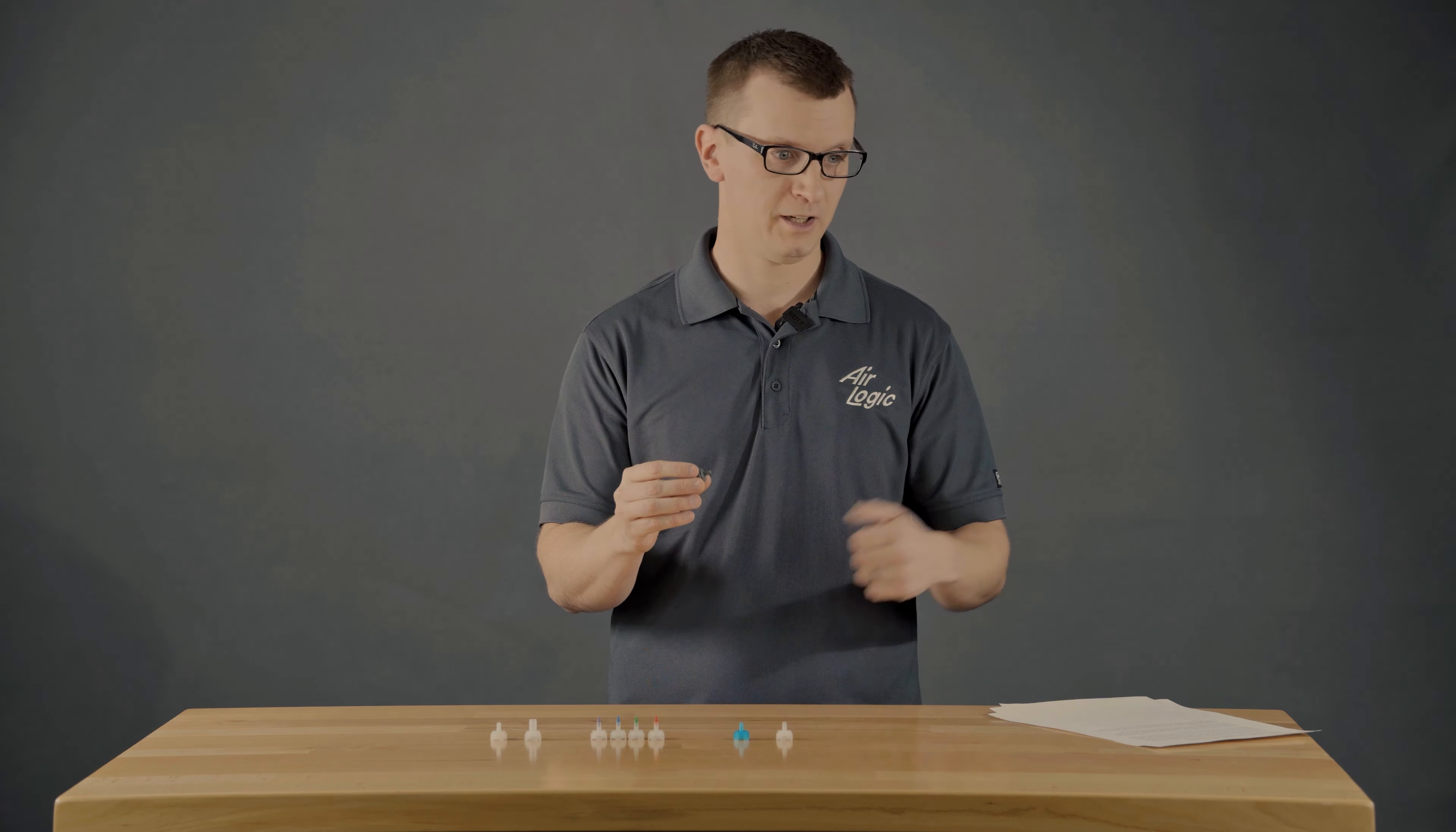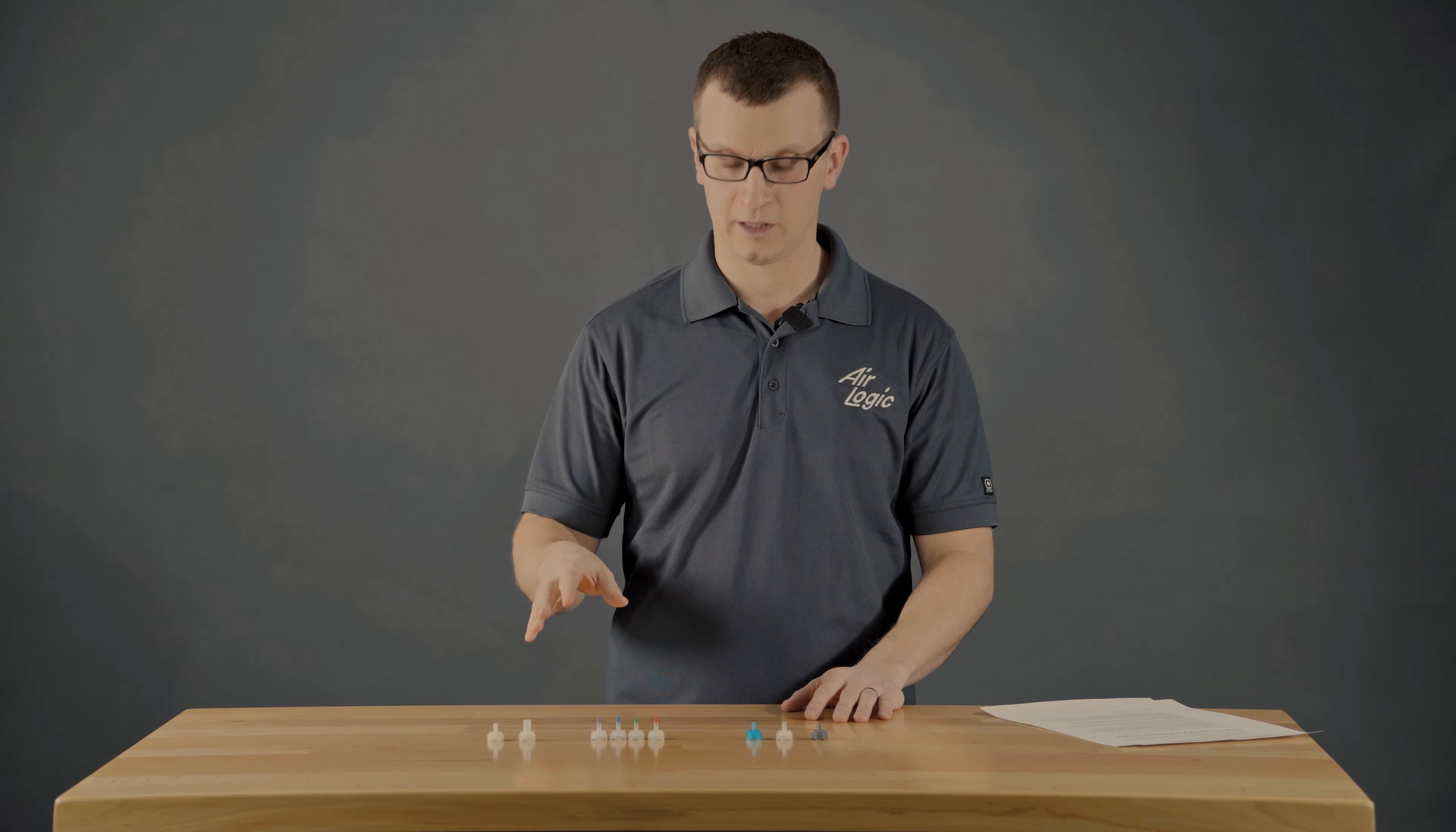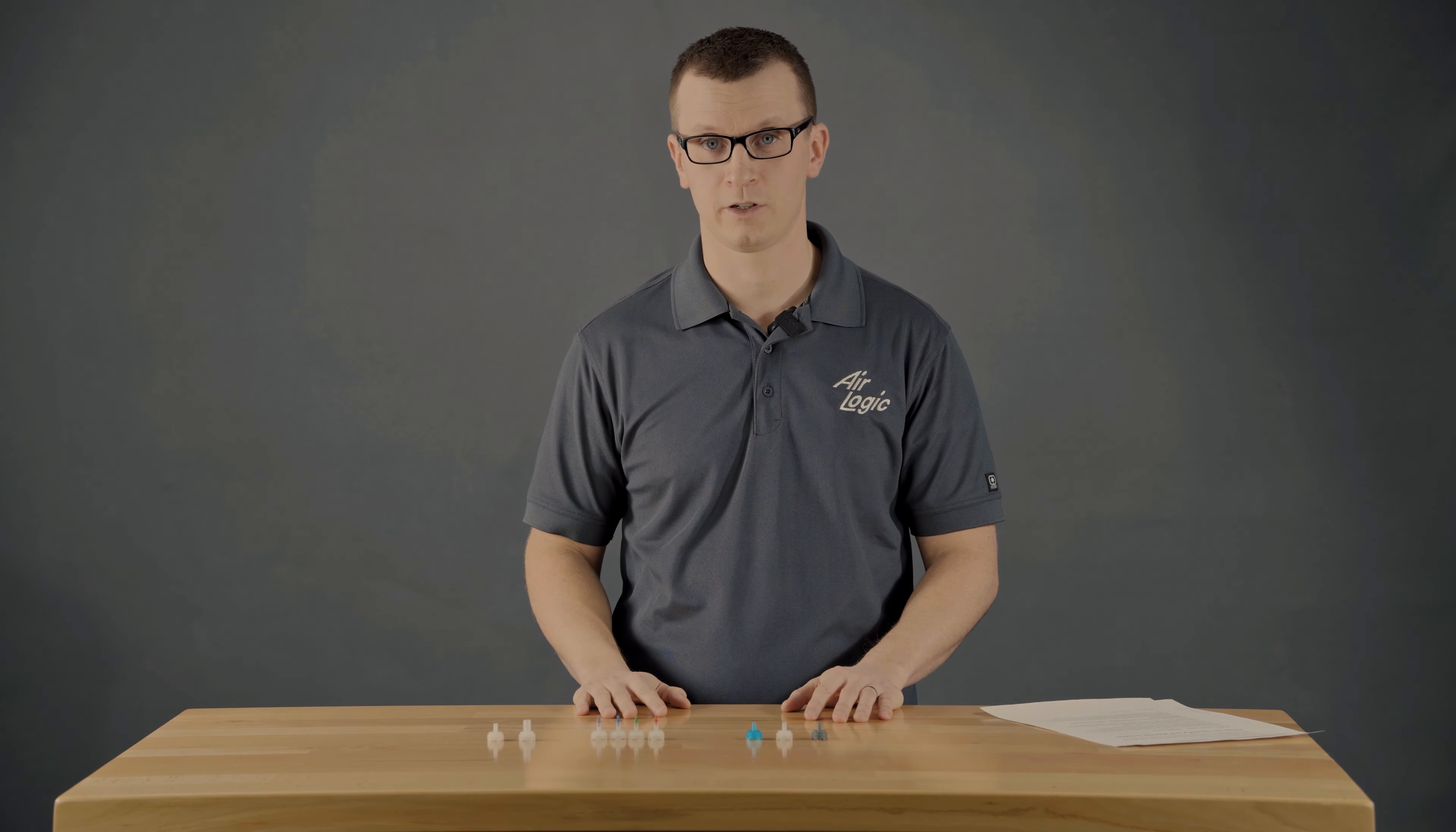So then after you have your mesh size figured out and your barb size, next you want to think about material selections. Generally, we make all these out of polypropylene. It's very chemically resistant, compliant in a wide range of industries. But once in a while, there's a situation where polypropylene doesn't work. We also have PVDF or Kynar, some people call it, options that's higher priced, more chemically resistant than even polypropylene. Check on the material to make sure that that's going to work for your situation too.